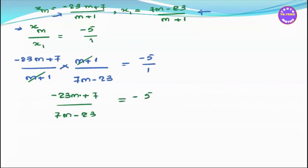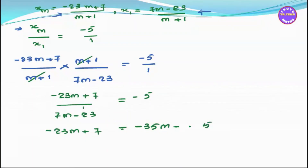Cross multiplying: minus 23m plus 7 times 1 equals minus 5 times (7m minus 23). Expanding: minus 23m plus 7 equals minus 35m plus 115. Adding 35m to both sides: 12m plus 7 equals 115, so 12m equals 108, giving m equals 9.